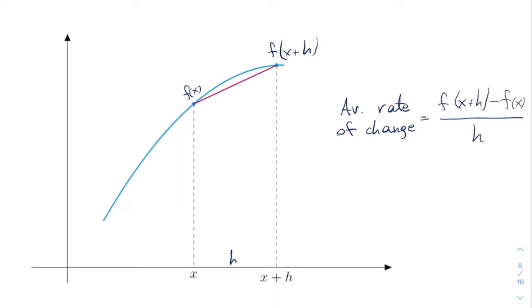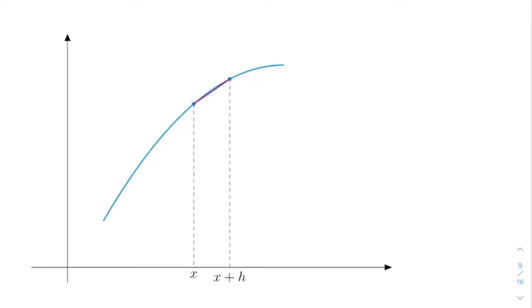So how about now we take h to be a bit smaller. Let's try that. So now h is a bit smaller so x plus h is a bit closer to x and we can repeat the same thing we did before.